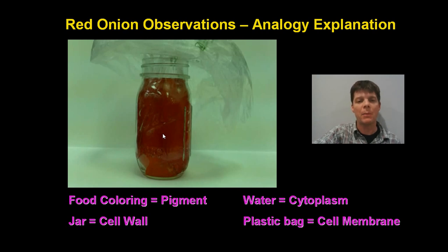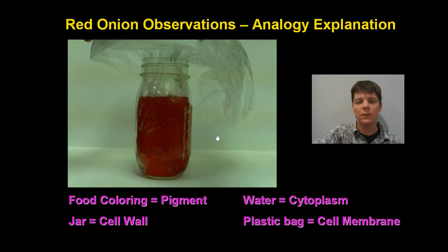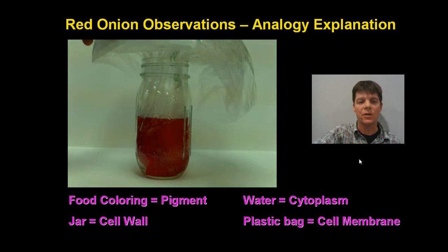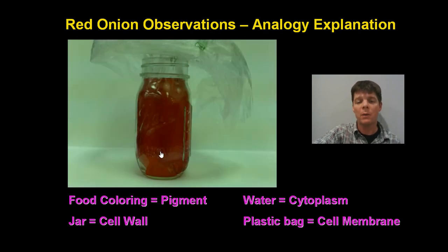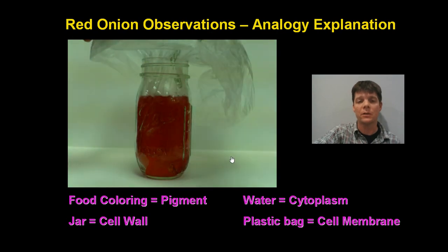Now let's watch what happens if we remove some of the water from the bag without removing any of the food coloring. I'll go ahead and play this video, and we should start to see the level of the water change. There we go — we're removing water from that jar, and we can see that the pigment has become darker colored, and the pigment is now only taking up a small amount of space in the jar.